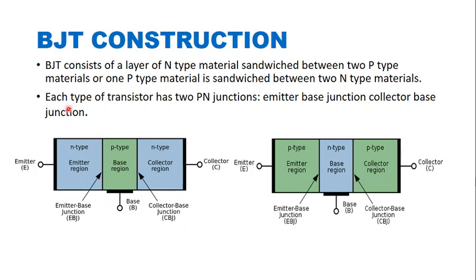Next is BJT construction. As you can see in this diagram, this is a schematic diagram of a BJT. It has three regions: emitter region, base region, and collector region. Based on the connection of n-type and p-type material, it is divided into two types: NPN transistor and PNP transistor. An NPN transistor is formed when one p-type material is sandwiched between two n-type materials.